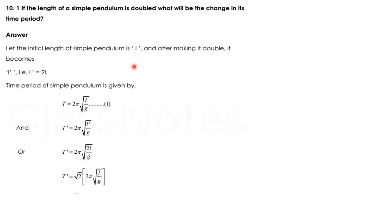The first question is, if the length of a simple pendulum is doubled, what will be the change in its time period? If we double the length in a simple pendulum, then what will be the time period?